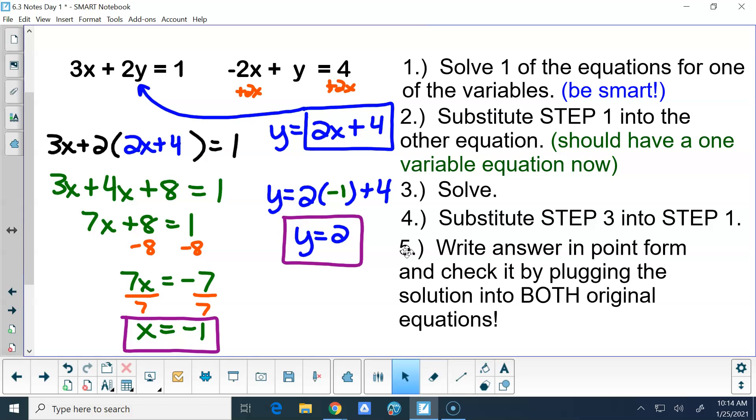And here is the kicker. Two things in this last step. First off, we have to write our answer in point form because this is taking the place of graphing. And when we were graphing, we found that point where those two lines intersected. So that's what we're doing here. We're just doing it algebraically, but our answer is still a point.